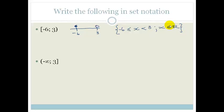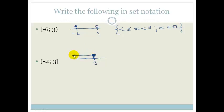Let's try another one: minus infinity to 3. Here's a hint — you can never reach infinity, so you should always use the parentheses when you use minus infinity or plus infinity. In this case we're using minus infinity. On a number line, we're going from 3, and because this is a square bracket we're including 3, then going to minus infinity. So in set notation, x has to be smaller than or equal to 3, and because there are no other limitations, x is an element of real values.